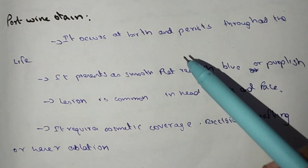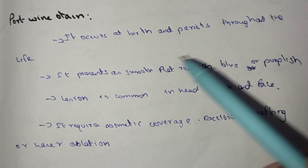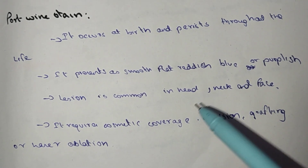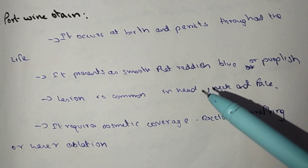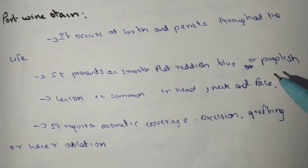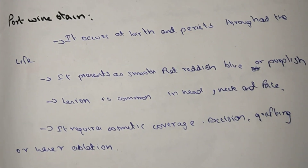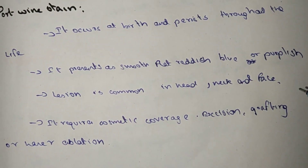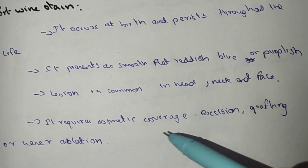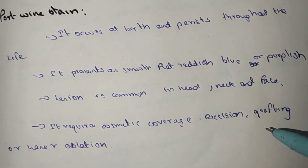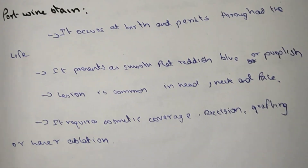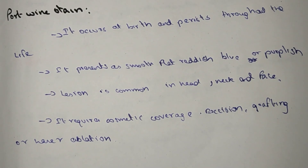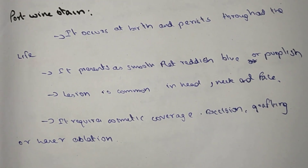Port wine stain occurs at birth and persists throughout life. It is present as a smooth, flat, reddish-blue or purplish lesion. The lesion is common in the head, neck, and face. It requires cosmetic coverage, which includes excision, grafting, or laser ablation.